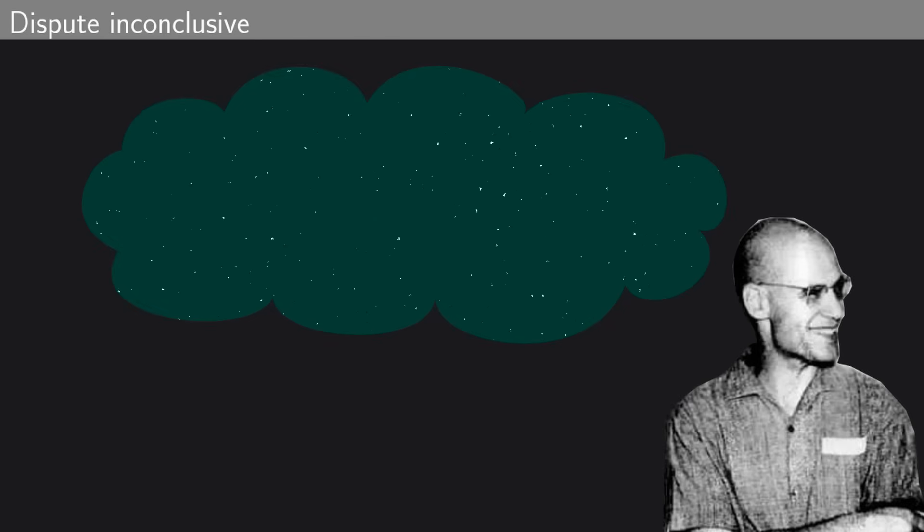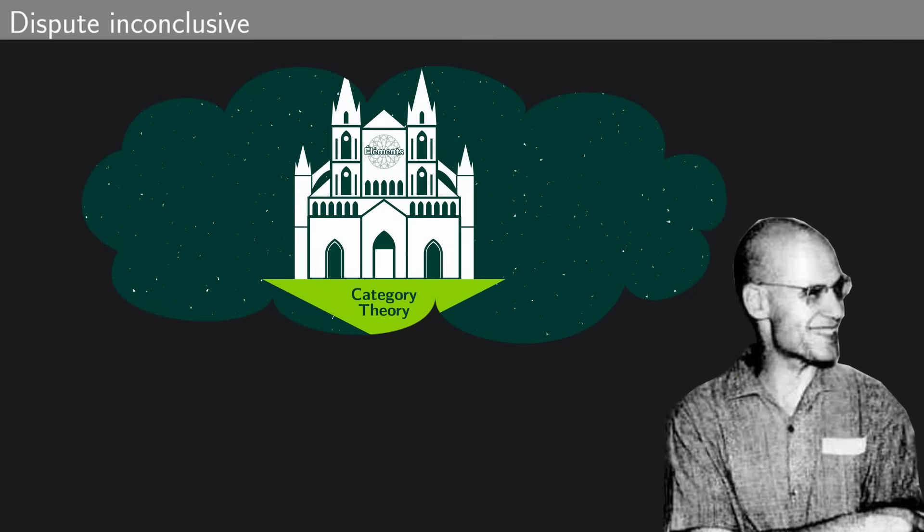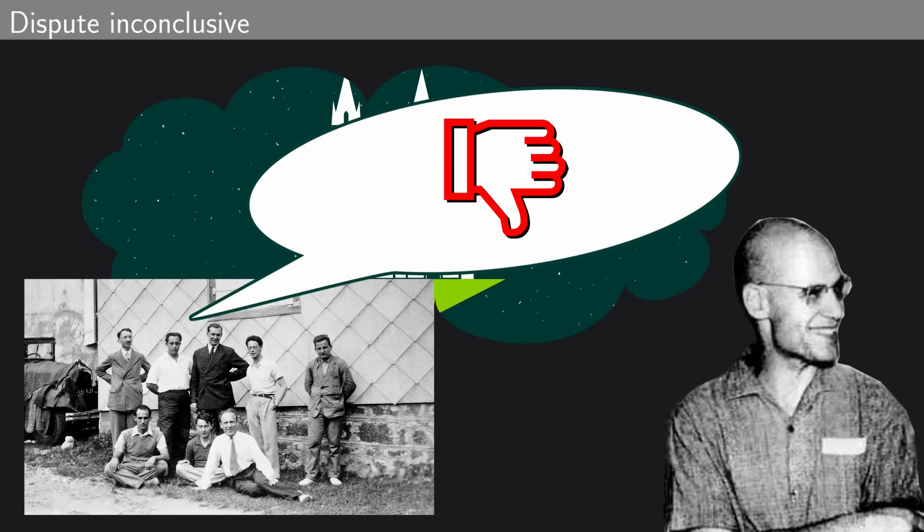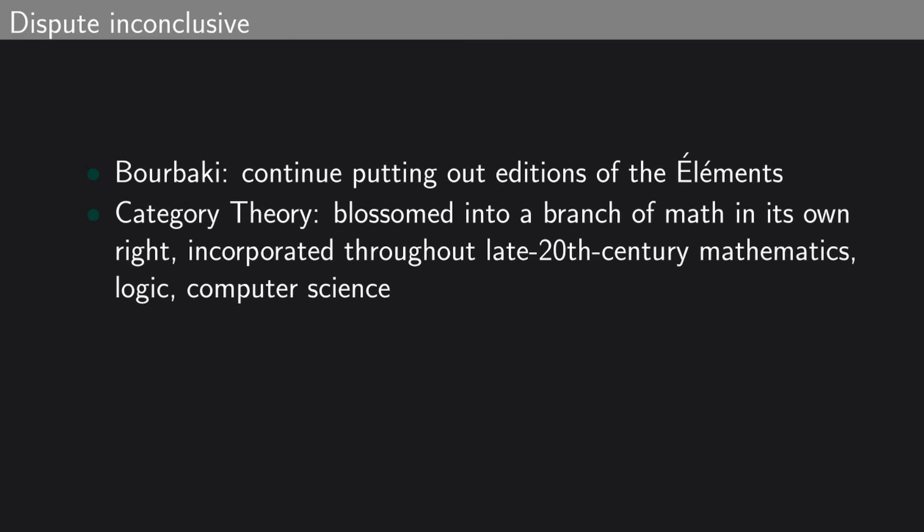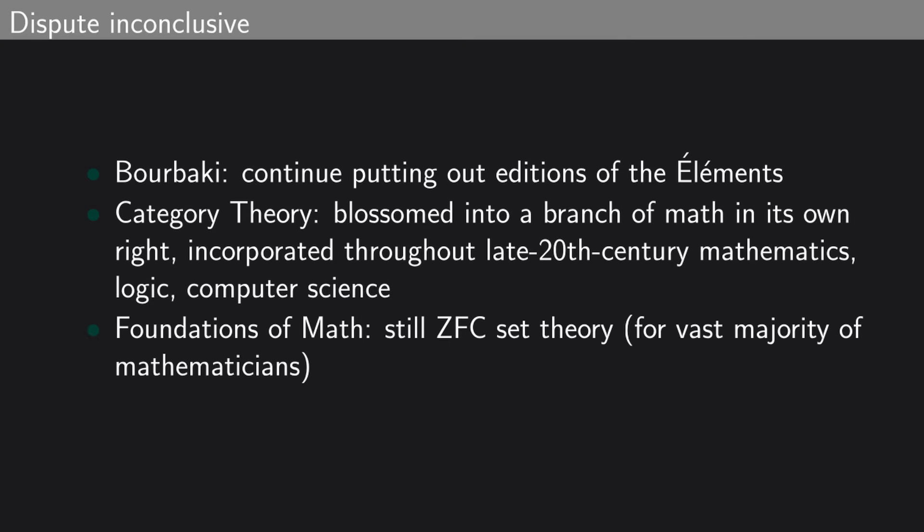This saga doesn't have a very conclusive ending, at least not yet. The category theorists, most prominently Grothendieck, pressed Bourbaki to start back at the beginning, this time basing everything on category theory. They did not. Indeed, the Bourbaki Collective continues to publish volumes of the elements, and has never made use of the tools of category theory. Category theory continued to develop as a field in its own right, and thanks to Grothendieck and Lawvere and many others, it has come to play a role in broad swaths of mathematics. But it didn't replace set theory as the foundation of all mathematics.